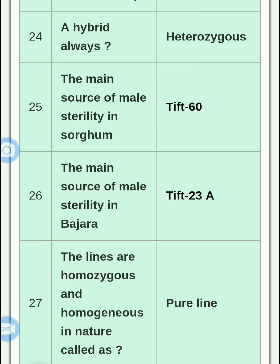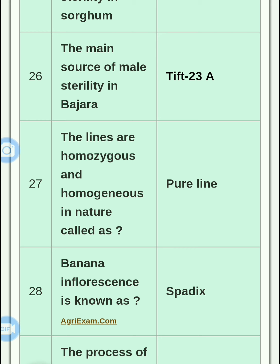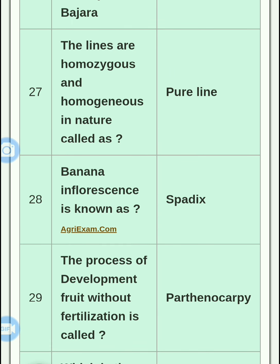The main source of male sterility in Sorghum is 60A, and the main source of male sterility in Bajra is 23A. Remember: Sorghum is 60A and Bajra is 23A. A pure line is homozygous and homogeneous in nature — the entire population is homozygous. If we talk about individual plants, they are homogeneous. A pure line is a self-pollinated crop.